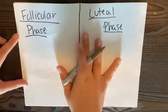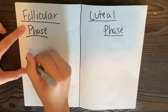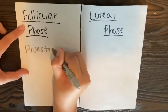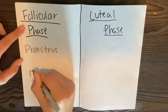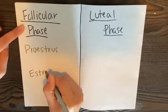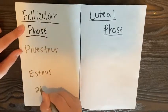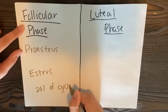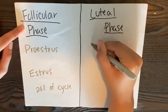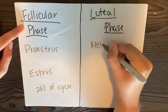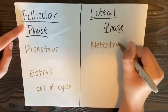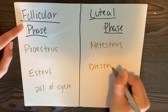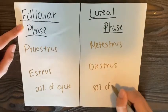The first phase is the follicular phase and includes proestrus and estrus. It makes up 20% of the cycle. The second phase is called the luteal phase and includes metestrus and diestrus. This phase makes up 80% of the cycle.